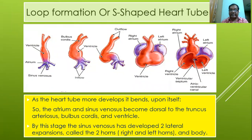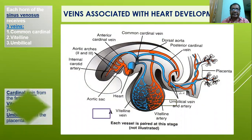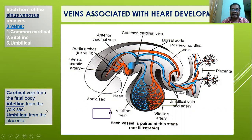By this stage, the sinus venosus has developed two lateral expansions called the right and left horns and the body. Three venous systems are associated with each horn of the sinus venosus: the cardinal vein from the fetal body, the vitelline vein from the yolk sac, and the umbilical vein from the placenta. The anterior and posterior cardinal veins form the common cardinal vein. All these open into each horn of the sinus venosus, both right and left, but the right predominates over the left.